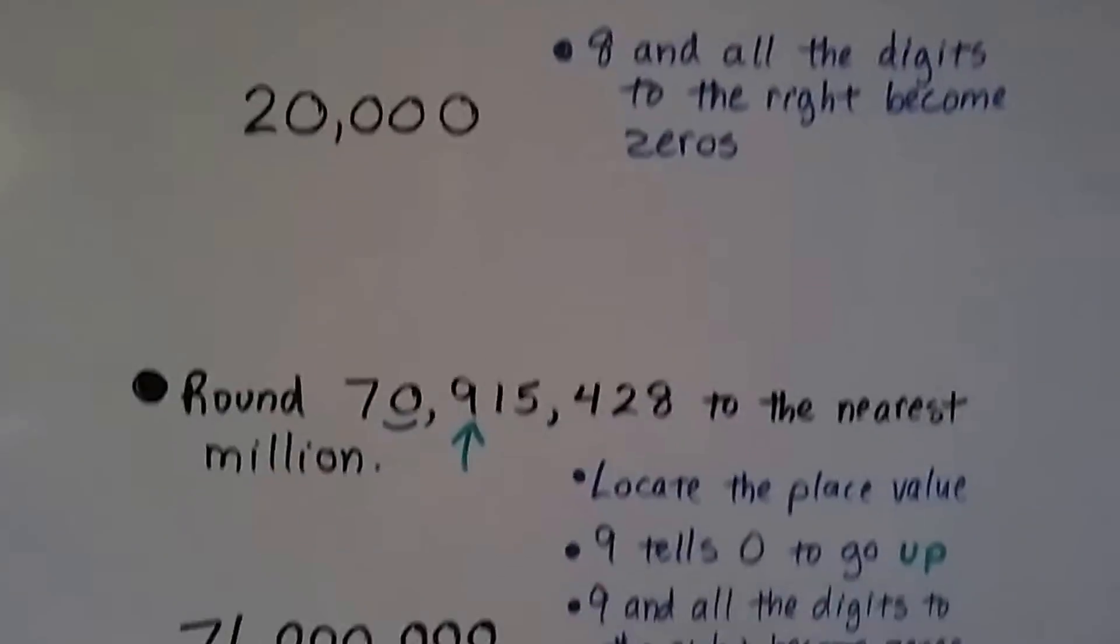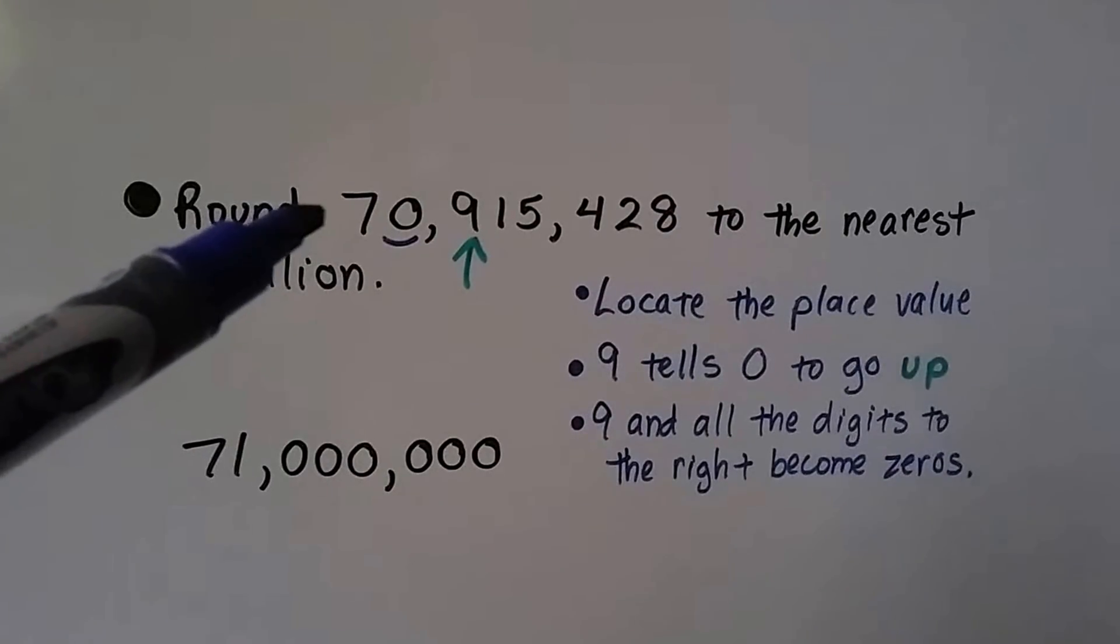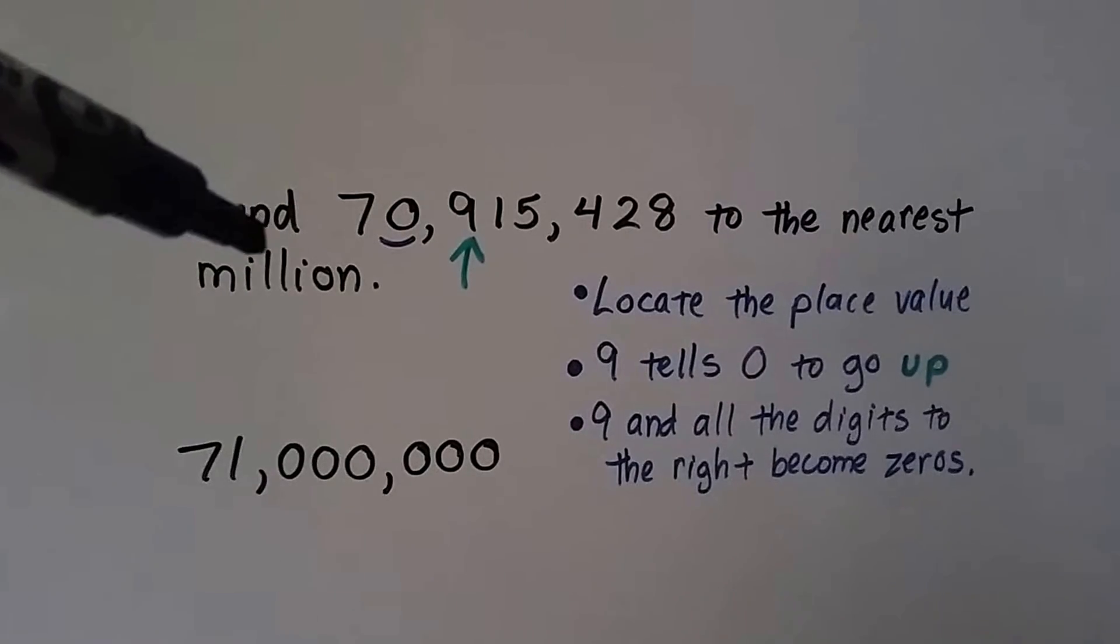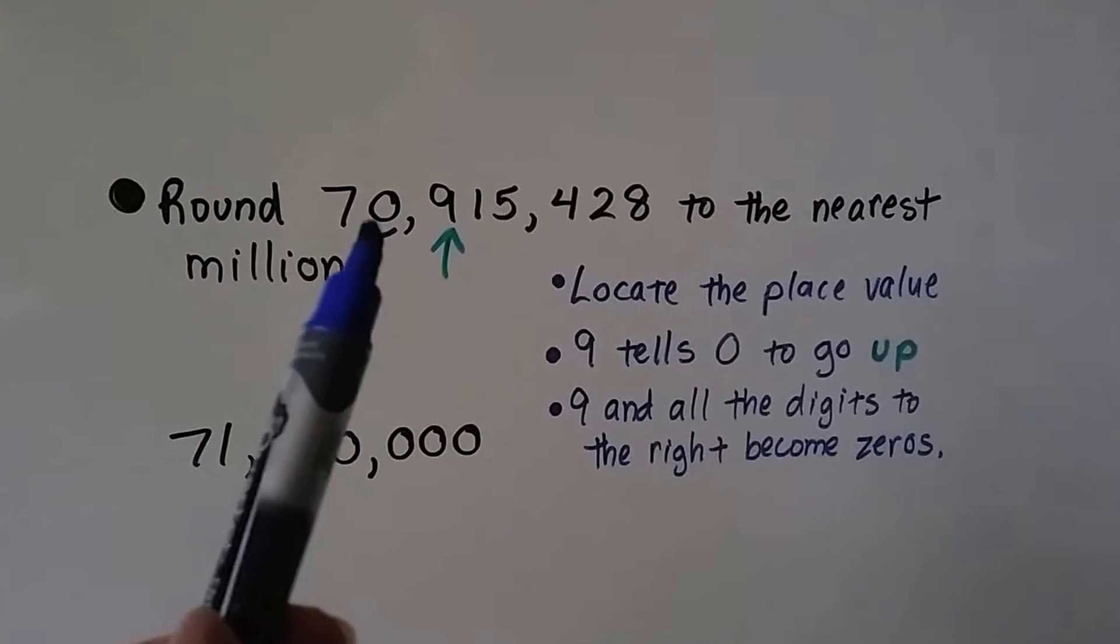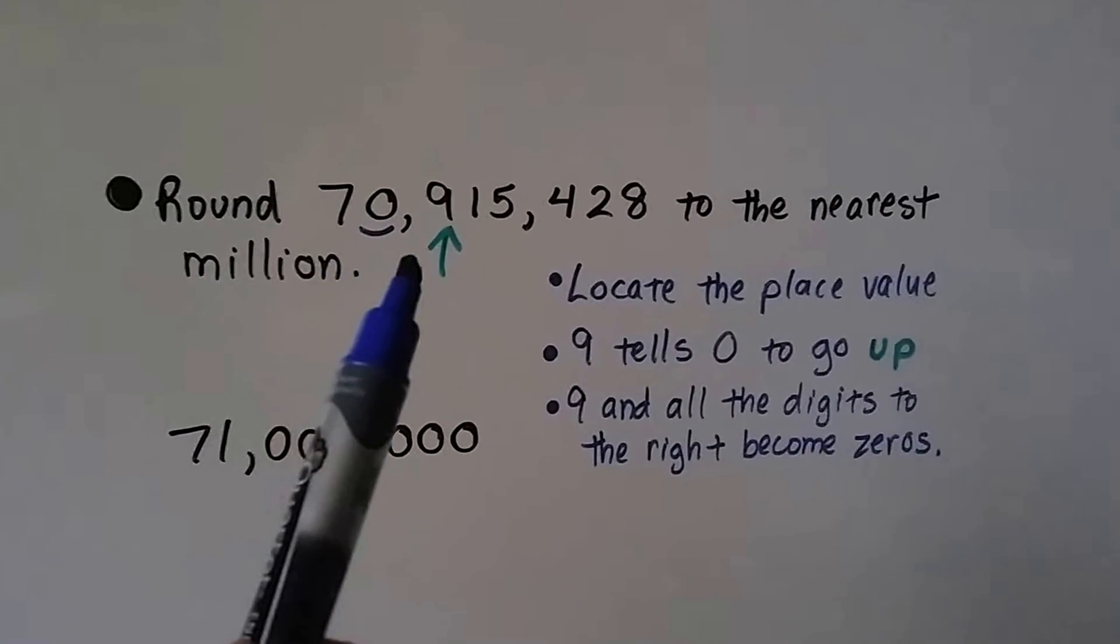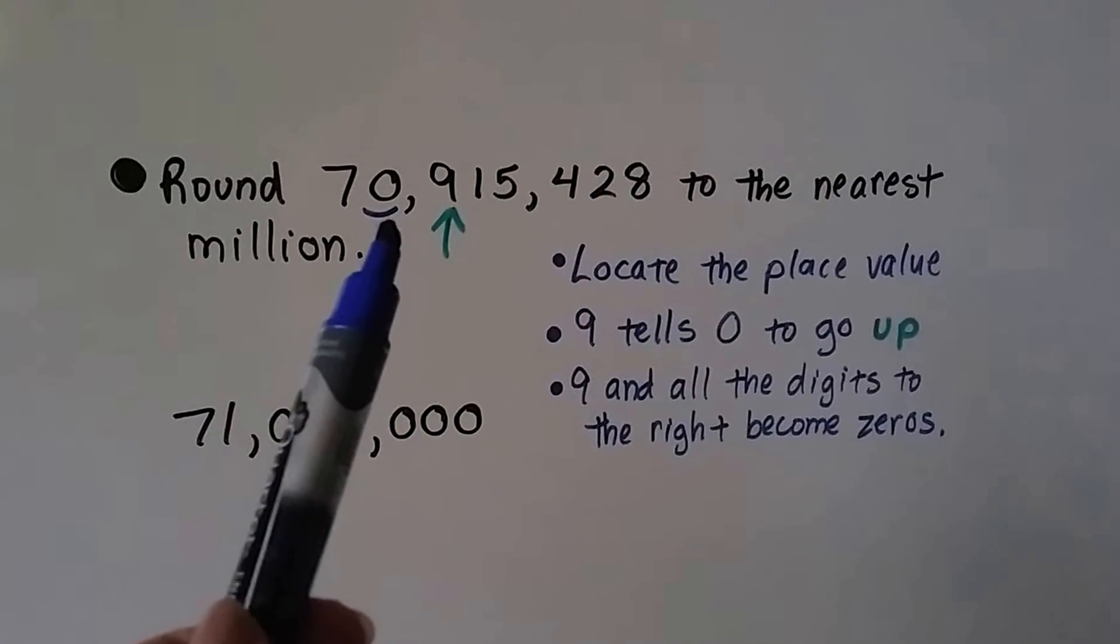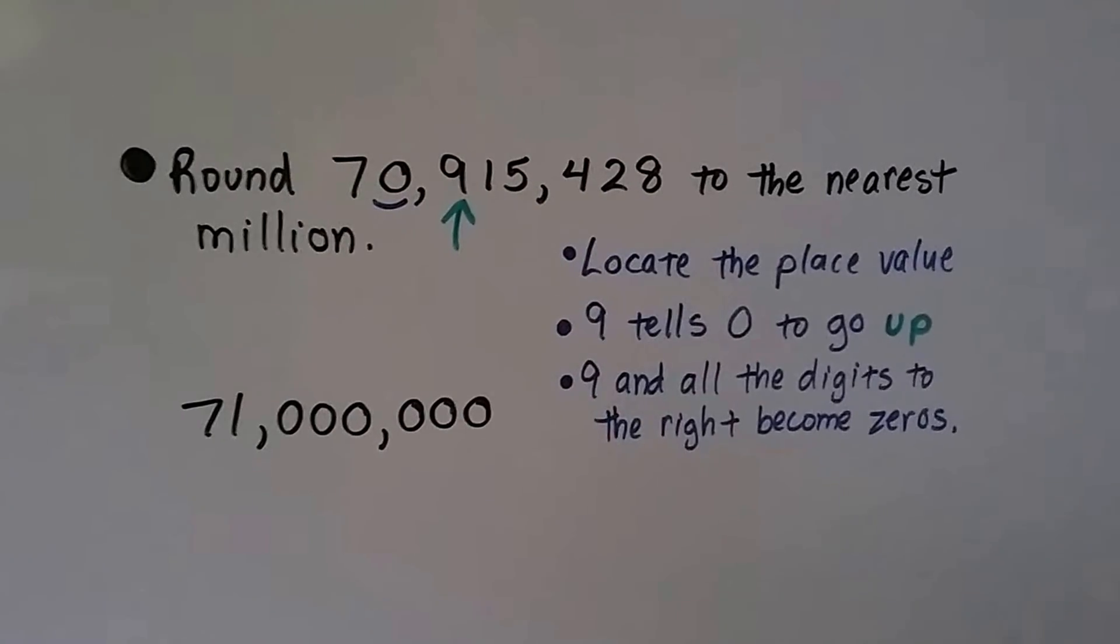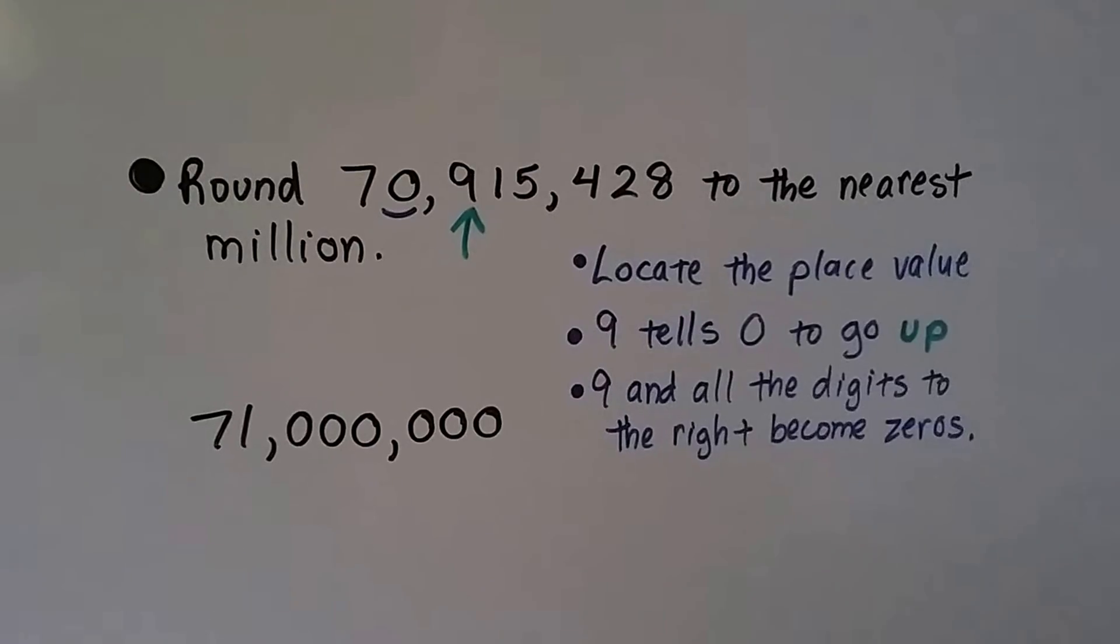Let's try it again. Now we've got a big number. It says round 70,915,428 to the nearest million. We locate that place value, million. There's a zero here. We look at the number to the right. It's a 9. 9 tells zero to go up. So it's going to go up to a 1. Then this 9 and all of these digits are going to turn into zeros. So we have 71,000,000.